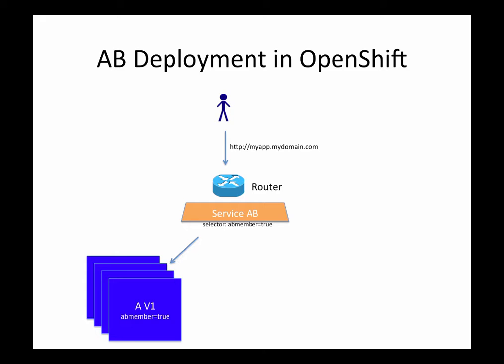You can choose whatever label name you want. When creating an application you can add labels for the service to group your pods. The service will be configured with a selector to select all pods with the label 'ab-group-member=true'. When you expose this service with a route, your router will be configured to direct all traffic coming to your application to any of these pods selected by that selector.